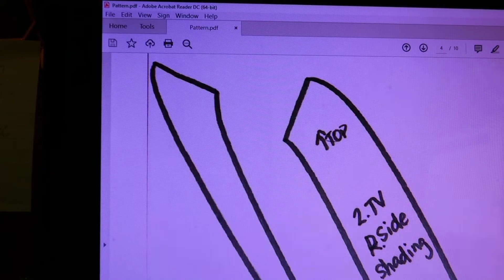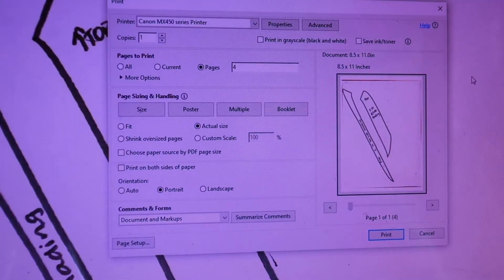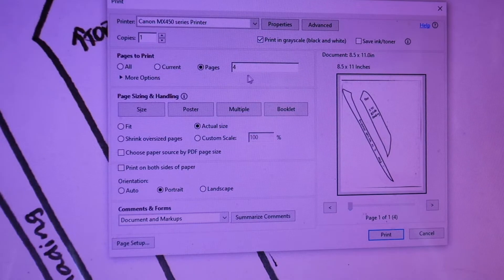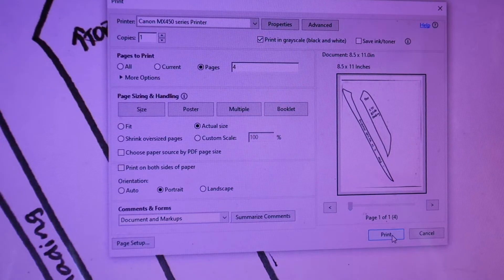Use your regular printer settings. You can choose grayscale to save on color printer ink if your image is in color. Hit Print.